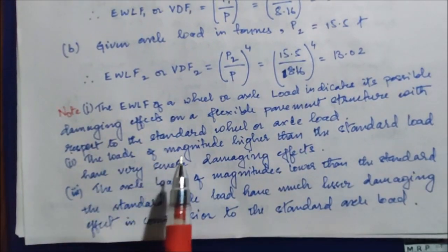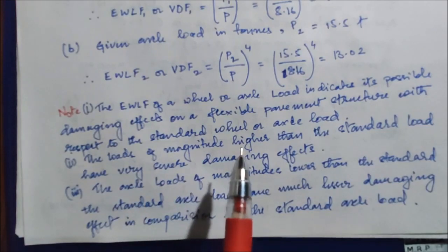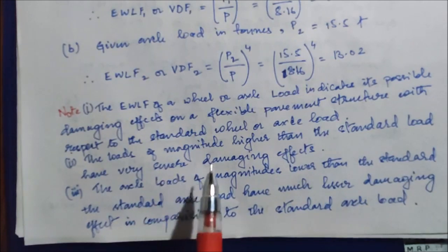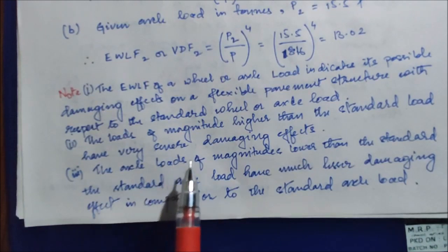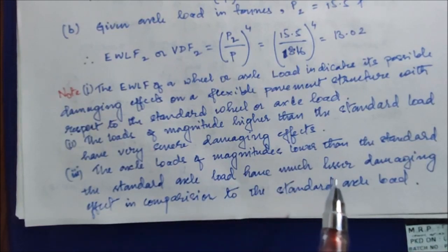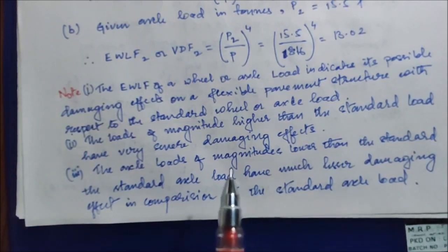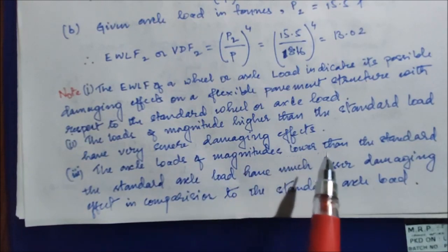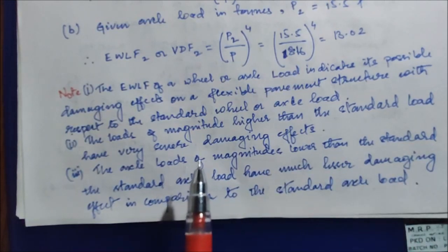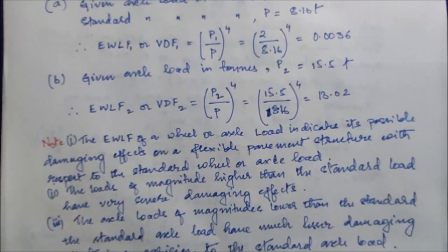Second: loads of magnitude higher than the standard load have very severe damaging effects on the pavement. Third: axle loads of magnitude lower than the standard axle load have much lesser damaging effect in comparison to the standard axle load. So if the magnitude of the load is lesser than the standard axle load, it will cause a lesser amount of damage to the pavement structure. Thank you everyone; we will come back to the next problem next time.